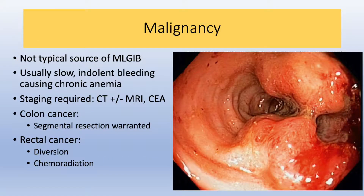While malignancy is a common source of chronic anemia and GI bleeding, it's not typically a source of massive lower GI bleeding — cancer usually causes a slow, indolent bleed resulting in chronic anemia. Biopsy through colonoscopy is warranted to make the diagnosis, and staging should be done if time permits, including a CEA level, CT imaging of the chest, abdomen, and pelvis for colon cancer, and an additional MRI of the rectum for rectal cancer. If emergency surgery is needed, segmental resection may be required; while proctectomy is not favored for rectal cancer, diversion with urgent institution of chemoradiation may be preferable.